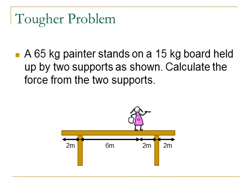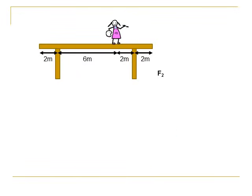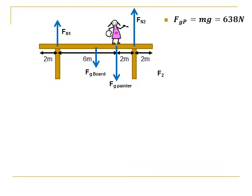Now for a much tougher, more typical problem. A 65-kilogram painter stands on a 15-kilogram board held up by two supports — calculate the force from the two supports. The first thing we do is draw a free-body diagram: the board has a force of gravity at its center of mass, the painter has a force of gravity pushing it down, and the two supports push it up. We need to calculate the forces of gravity for the painter and the board, since the problem gives mass but torque requires force — so force of gravity equals mass times g.